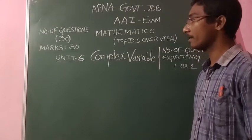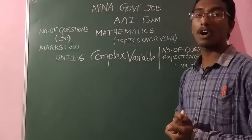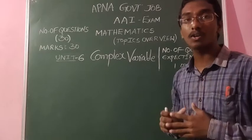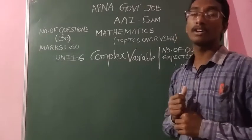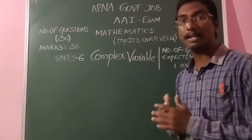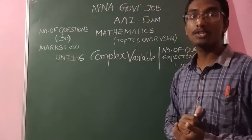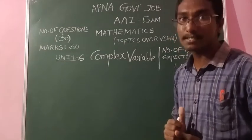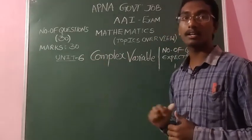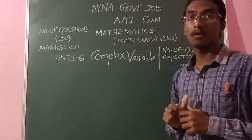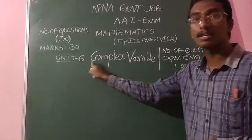After Unit 5, Unit 6 is Complex Variable. In this unit, we discuss the applications of complex numbers — how complex numbers are applicable in real life, physics, mechanics, and dynamics. There are a few theorems useful for solving problems in less time. It is a small but very important unit, and by previous paper analysis, we may get 1 or 2 questions from Unit 6.